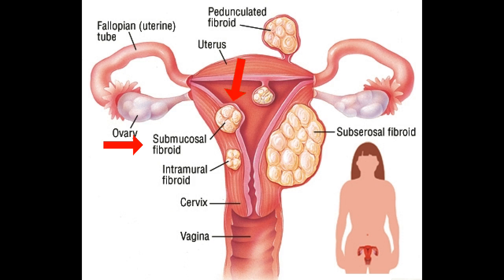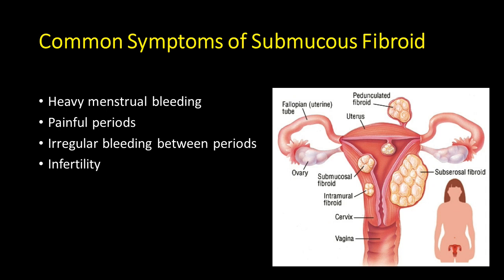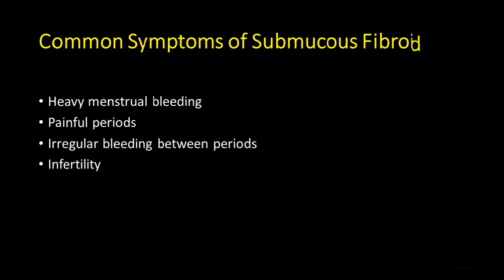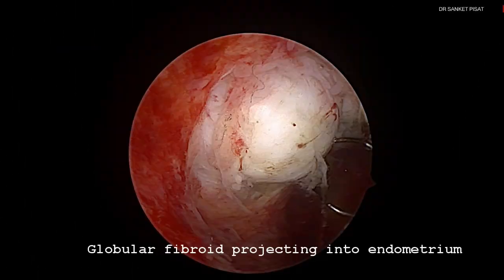A submucosal fibroid typically projects inside the endometrial cavity, bulging the cavity from within. These types of fibroids usually give complaints like heavy menstrual bleeding, painful periods, irregular bleeding between periods, and infertility.